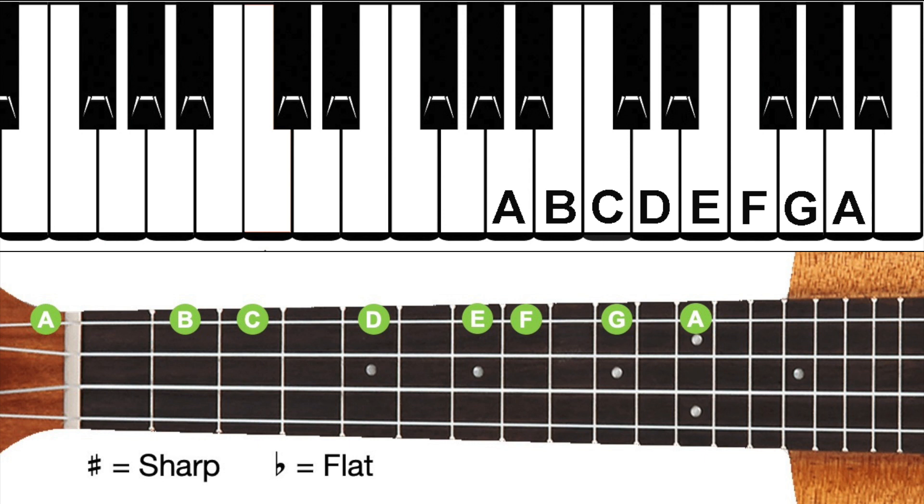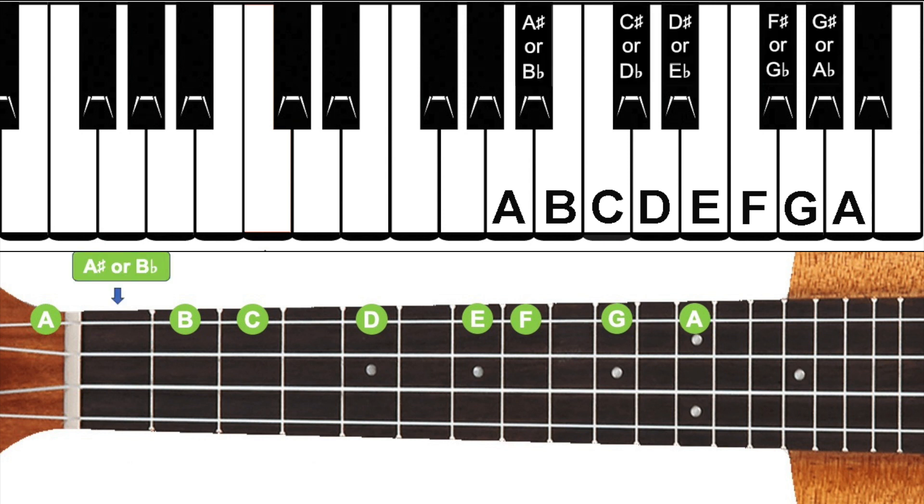So the black note, between the A and the B on the piano keyboard, or the first fret of the A string on our ukulele, could be referred to as either an A sharp or a B flat. It's the same note that we hear, but has two possible names depending on context. A sharp, or B flat.